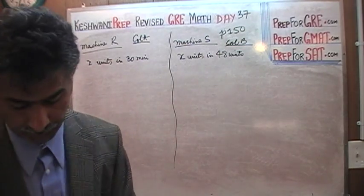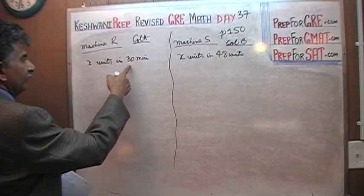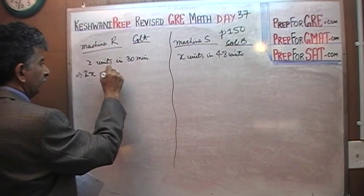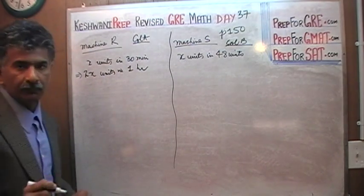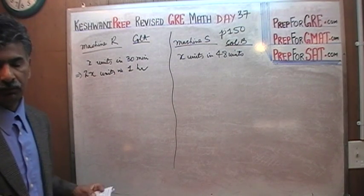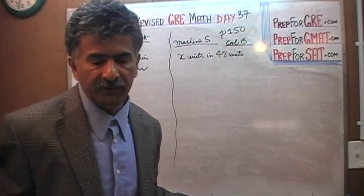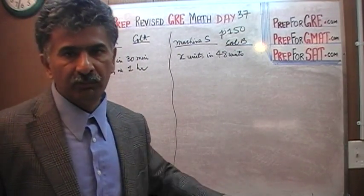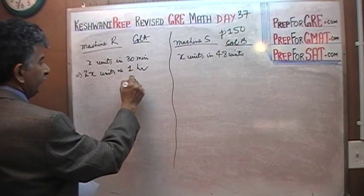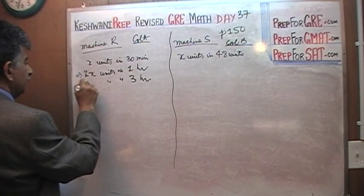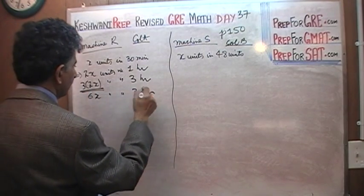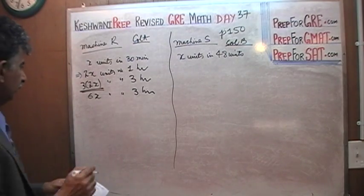X units in 30 minutes implies it will make twice as many units in one hour, because it works at a constant pace. Therefore, in 3 hours it makes 3 times that amount — 6X units in 3 hours. Very simple and straightforward. So column A is 6X.